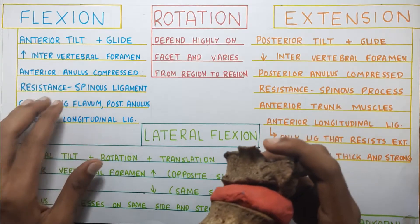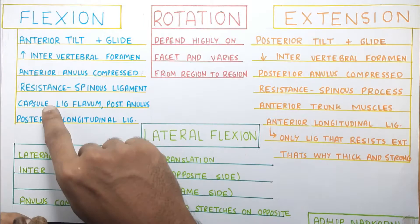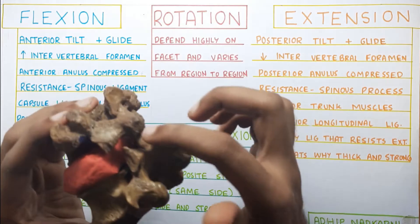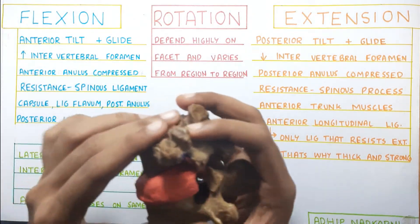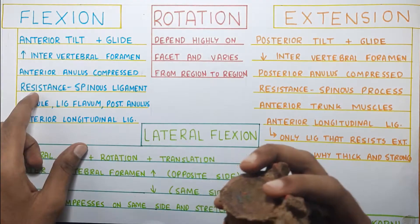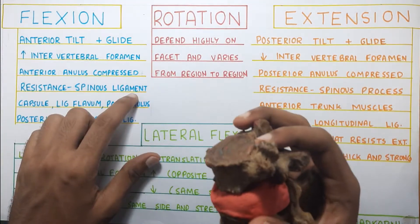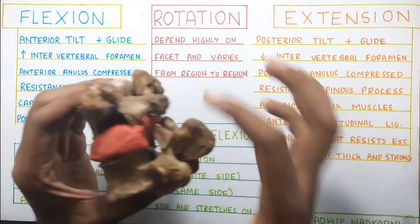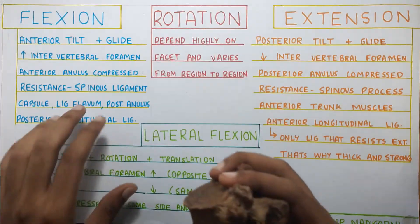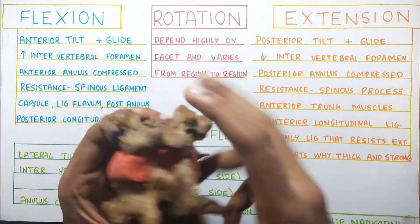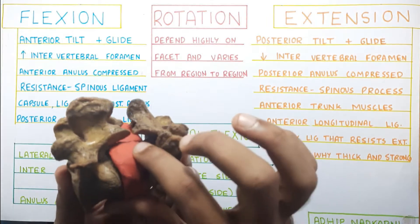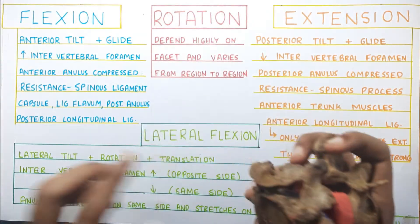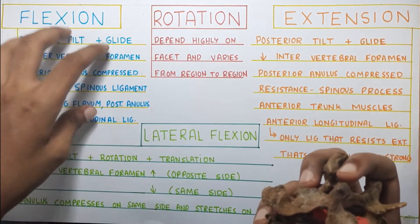The resistance to flexion is provided by your spinous ligaments — the interspinous and supraspinous ligament. Also the capsule, ligamentum flavum which connects the two laminas, the posterior annulus fibrosus, and also the posterior longitudinal ligament will prevent flexion.